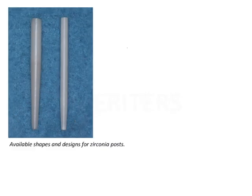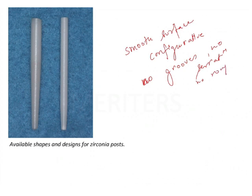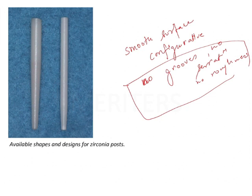This shows the available shape and design for a zirconia post. Important things to note: the zirconia post has a smooth surface configuration — no grooves, no serrations, no roughness. All these features relate to mechanical retention. Since this post lacks these features, zirconia posts do not bond well with composite resins and may not provide the best support for a brittle all-ceramic crown. In vitro studies have indicated that the smooth surface configuration of untreated zirconia leads to failure at the cement-post interface.